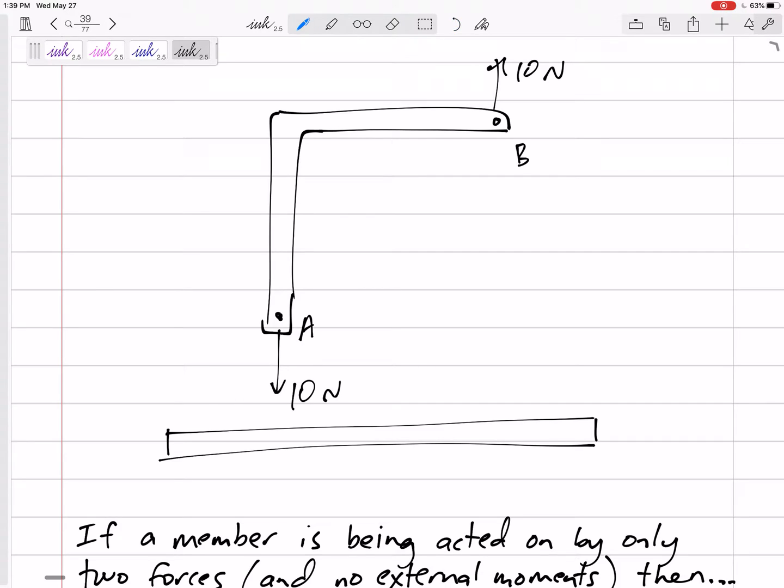So what could I have? I couldn't have this and this. What could I have at A and B so that the sum of the forces is equal to zero and the sum of the moments is equal to zero?